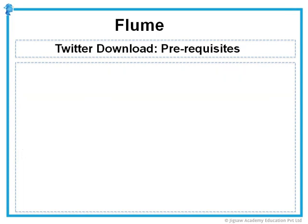Before that we have a couple of prerequisites to complete for this task. First, we need to have a Twitter account. You need to have an access token and API key to be able to authenticate and connect to Twitter and set up the Twitter stream. So if you do not have a Twitter account, create one at twitter.com. Once you have the account, go to dev.twitter.com and log in using those credentials.